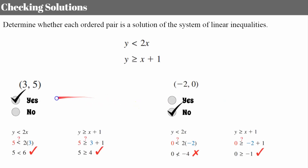When we plug in the ordered pair (3, 5) — y is five, x is three — it checks. Five is less than six.